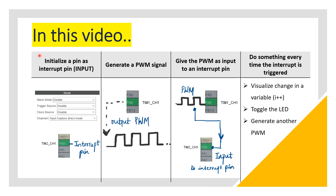In this video I will walk you through these steps: first, initialize a pin as an interrupt pin using Timer 2 Channel 1, then generate a PWM with a fixed frequency using Timer 1. This PWM will be used as an input for the interrupt pin, and we can visualize a change in a variable every time the interrupt is triggered. We can also observe a GPIO pin toggle between high and low every time the interrupt is triggered, producing a PWM signal at the GPIO output.